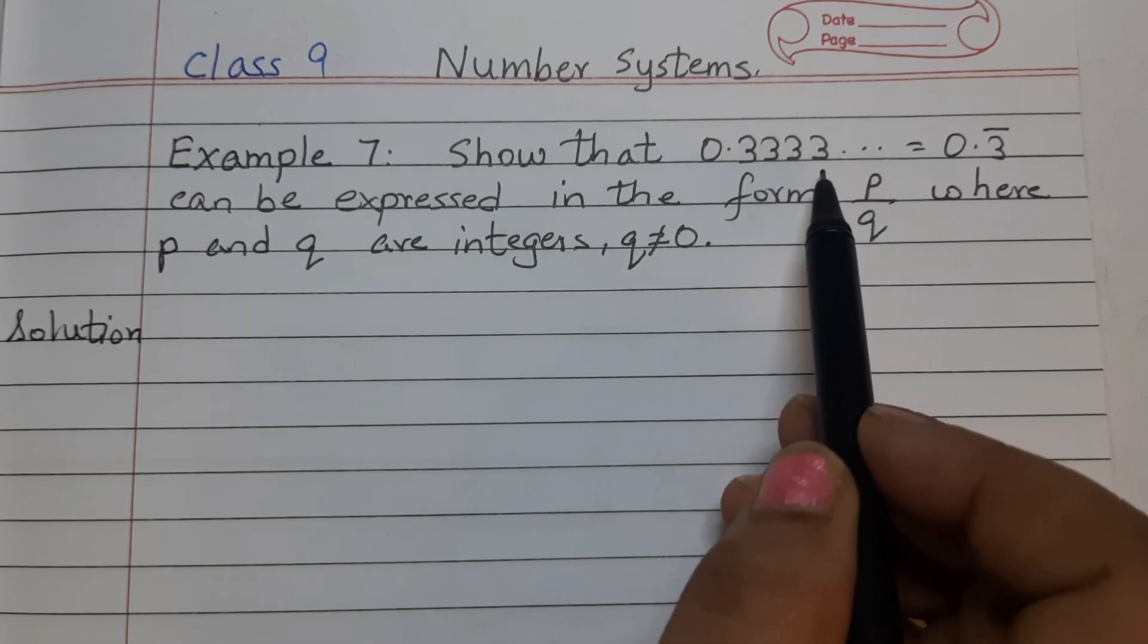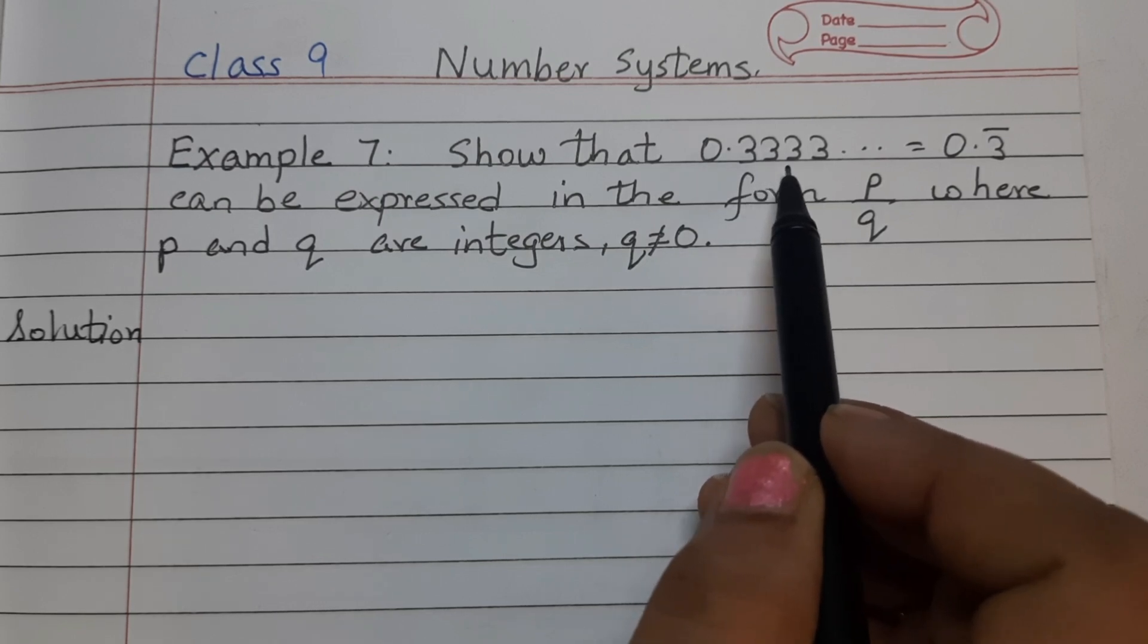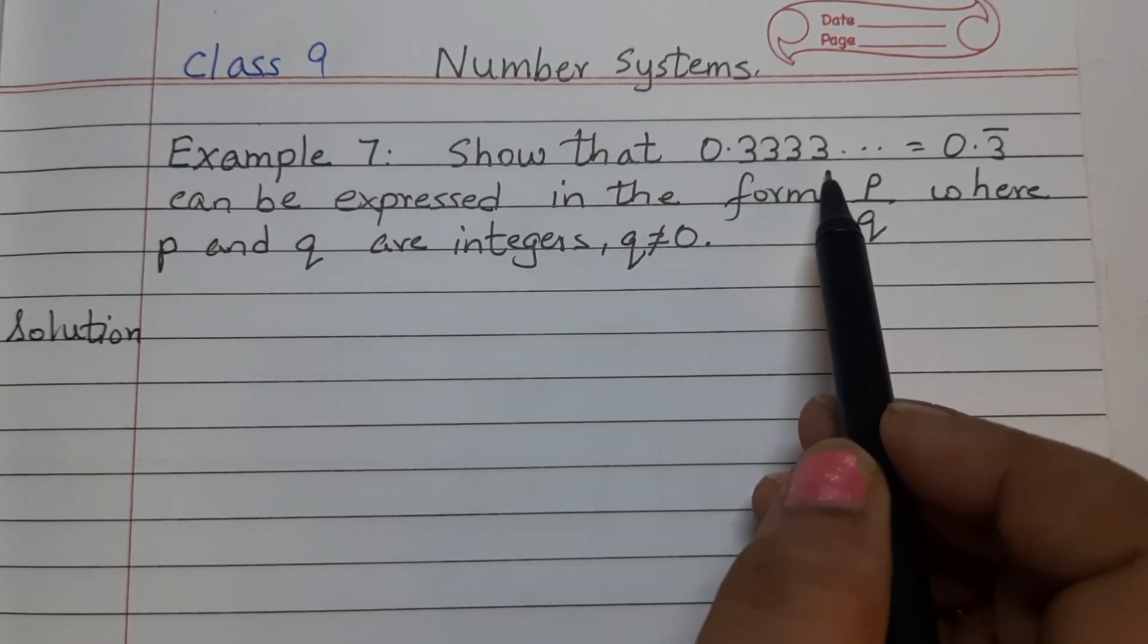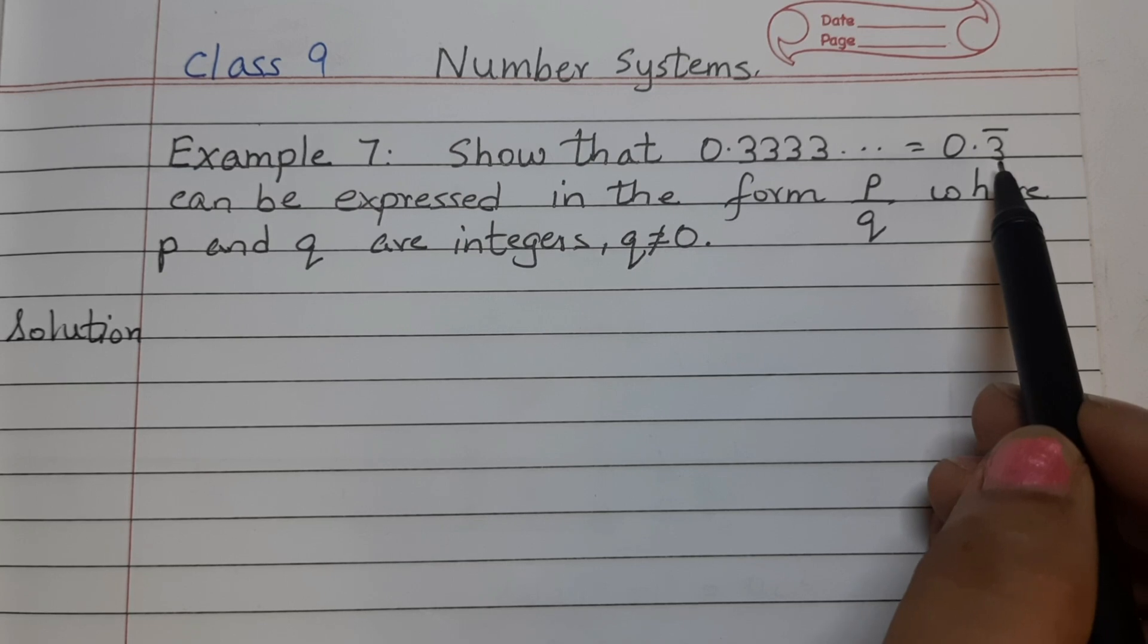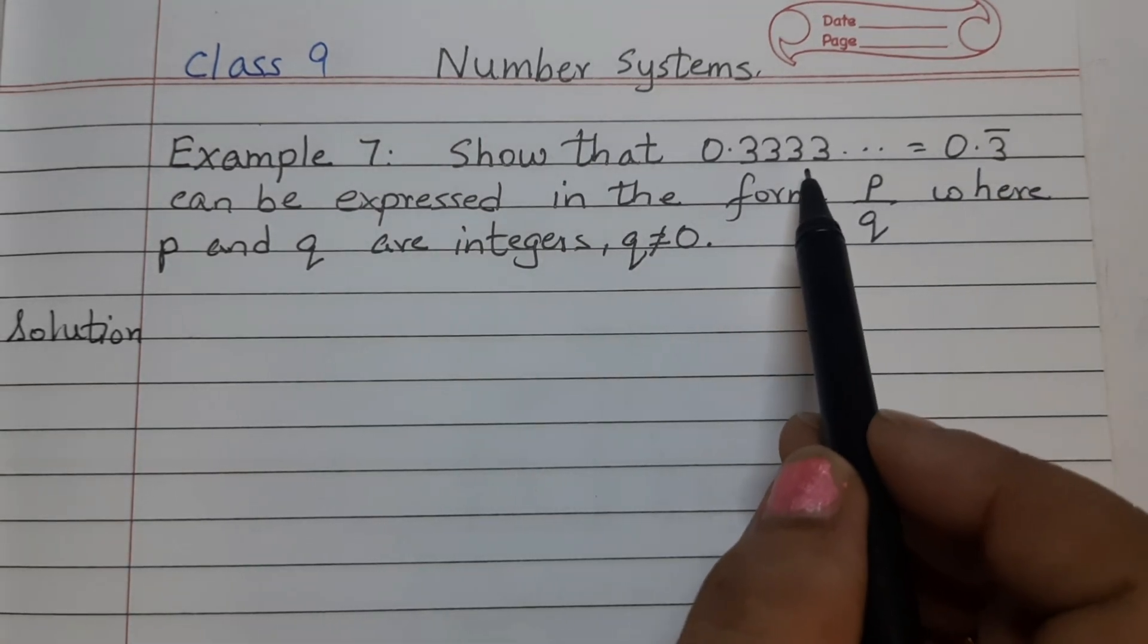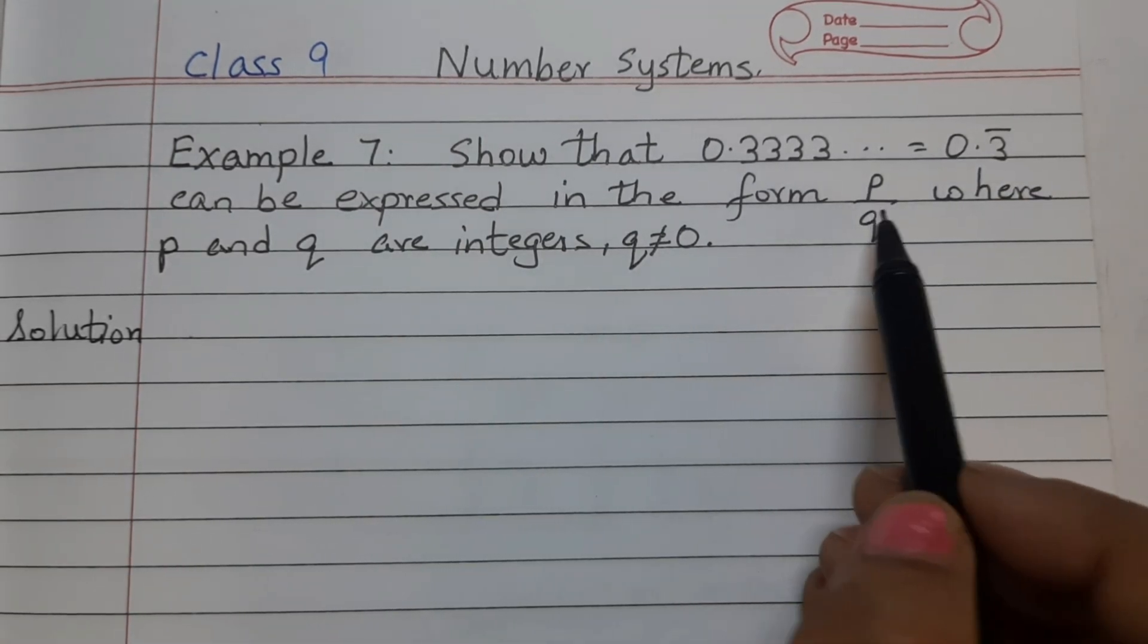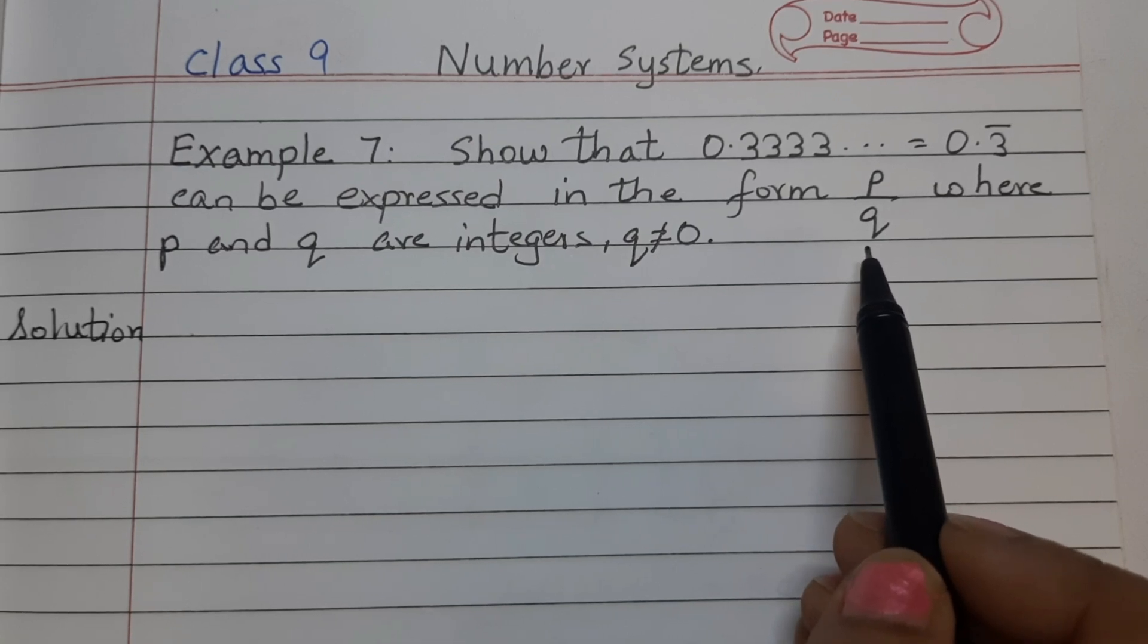So here we have a decimal number 0.3333 and then dot dot dot means it's a non-terminating repeating decimal expansion. 3 is repeating itself and it goes on forever. To show that, we have put a bar here. This bar indicates that 3 is repeating itself. This number we need to write in p by q form, that is, as a rational number.